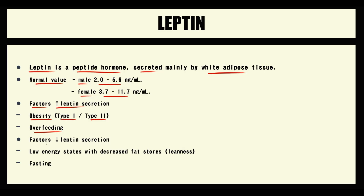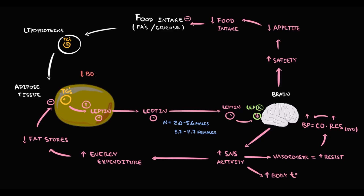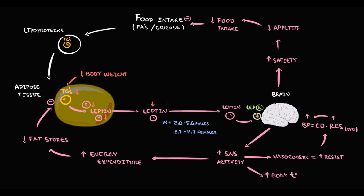One of the most common factors associated with low leptin level is low energy states with low fat stores — basically, a person with low body weight. In a person with low body weight, typically the amount of triacylglycerols in the adipose tissue is very low. The lower the amount of triacylglycerols, the lower is the production of leptin. As a result, leptin concentration in the blood remains low.